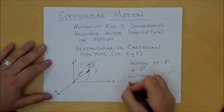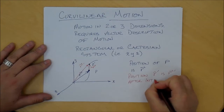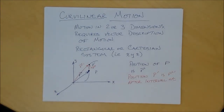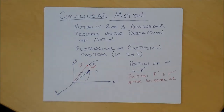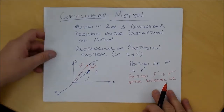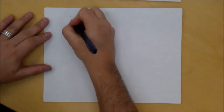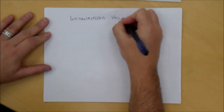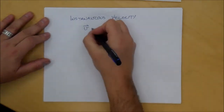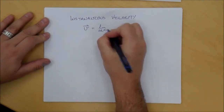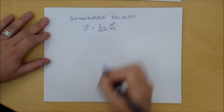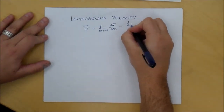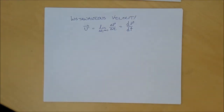Position P prime is R prime after the interval. Suppose that time interval is delta T. A particle has moved from position R to position R prime over time delta T. Just like with rectilinear motion, in curvilinear three-dimensional motion we can find the instantaneous velocity. The instantaneous velocity vector V is equal to the limit as delta T approaches zero of delta R divided by delta T, which by calculus is just dr/dt — the derivative of the position vector with respect to time.